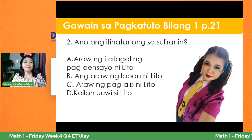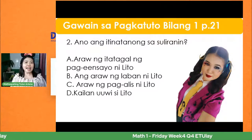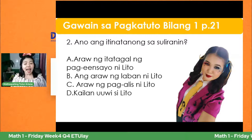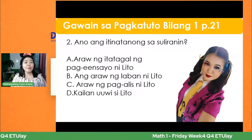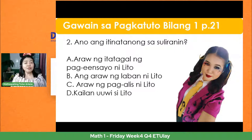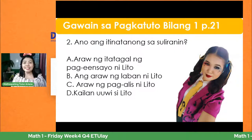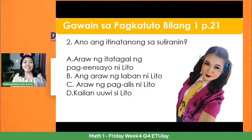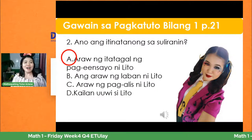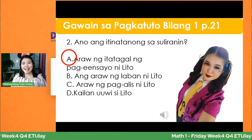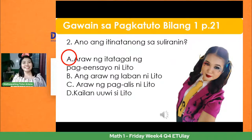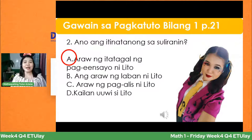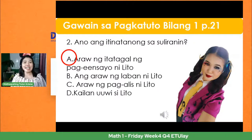Number 2 — ano ang tinatanong sa suliranin? A. Araw nang itatagal ng pag-eensayo ni Lito. B. Araw nang laban ni Lito. C. Araw nang pag-alis ni Lito. D. Kailan uuwi si Lito? Ang tamang sagot ay letrang A — araw nang itinagal ng pag-eensayo. Tama si Kelvin, si Merle, si Adam.